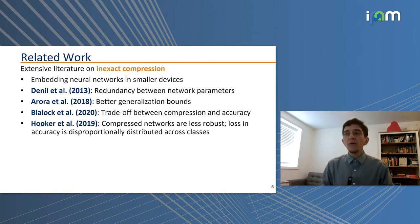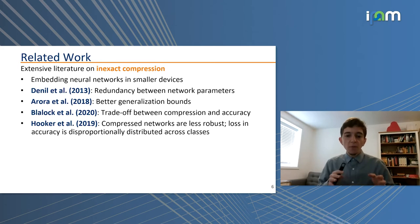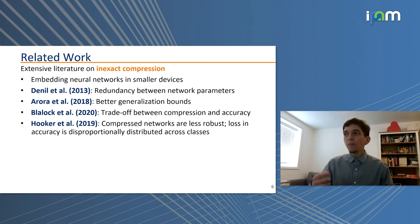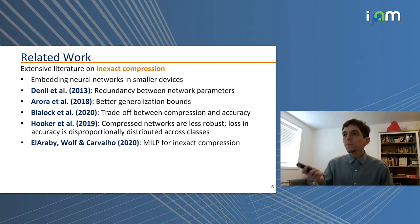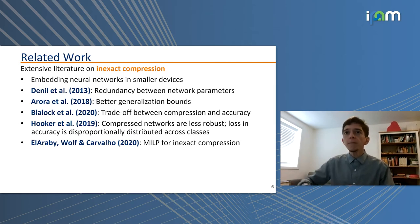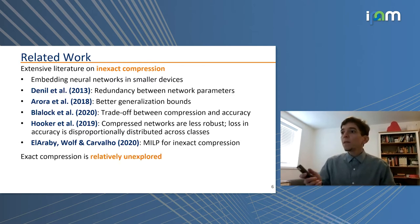Another issue with inexact compression is that compressed neural networks may be less robust, and any loss in accuracy can be disproportionately distributed across classes. We may see an improvement in accuracy for the majority class but worsening for minority classes, which raises fairness concerns. There is a growing body of work on compression using optimization formulations, especially for inexact compression — including one paper using mixed integer programming, the same approach we use in our work.